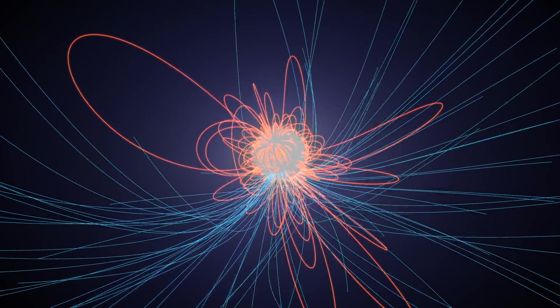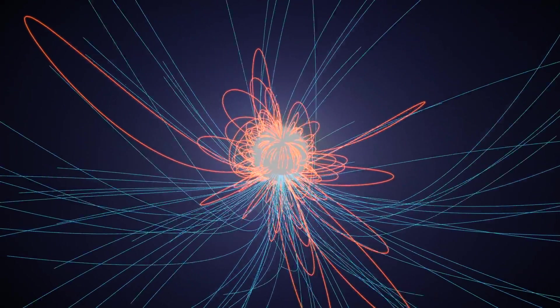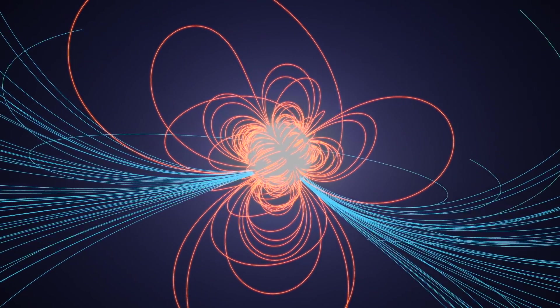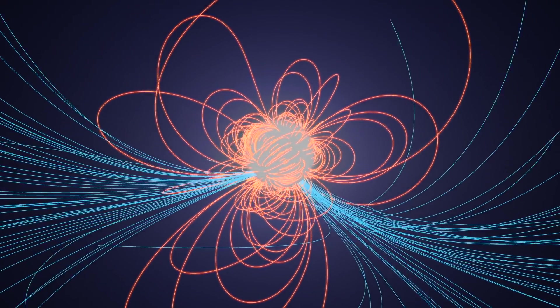Scientists are still trying to determine why J0030's spots take on these shapes and arrangements, but for now it's clear that pulsar magnetic fields are more complex than originally assumed.